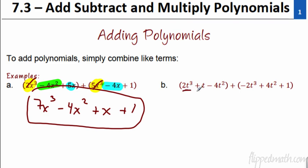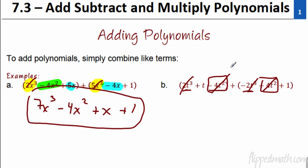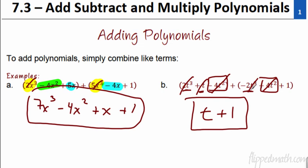So we have 2t to the third and a negative 2t to the third — they're going to cancel out. I then look at the t to the second power. We have negative 4t squared and a positive 4t squared — they cancel out, nothing left there. We go down to the next term, t to the first. That's all I have here; there's no other terms, so I'm going to bring that down. You can write 't to the first' if you want to, but you don't need to. We're left with another 1, so this one simplifies to t plus 1 when you combine like terms. That's as easy as it gets.